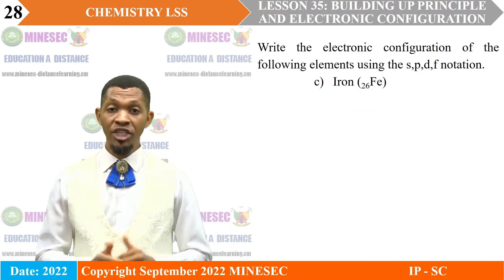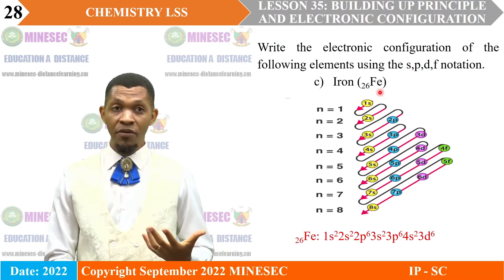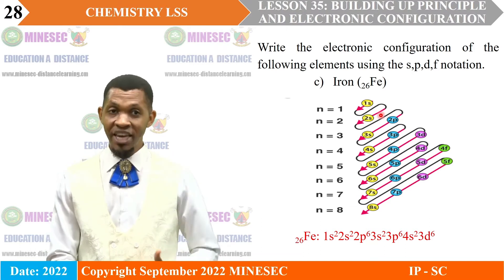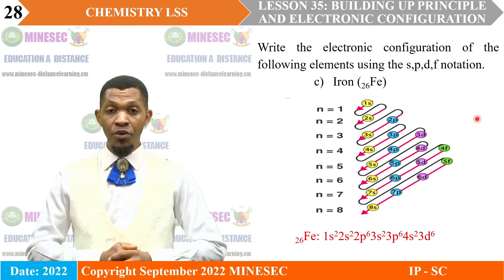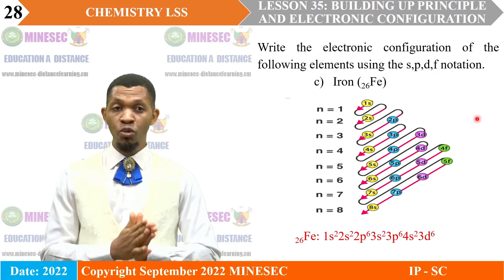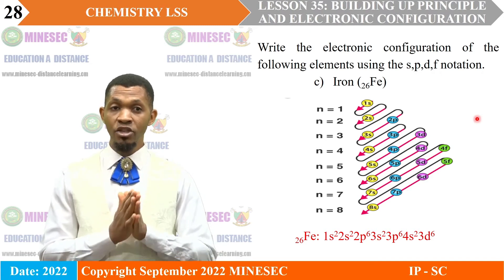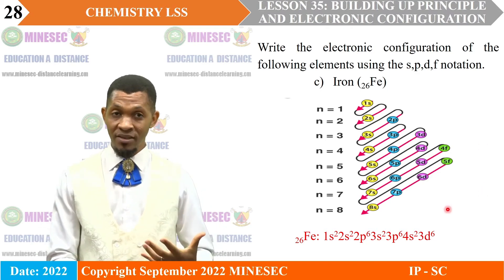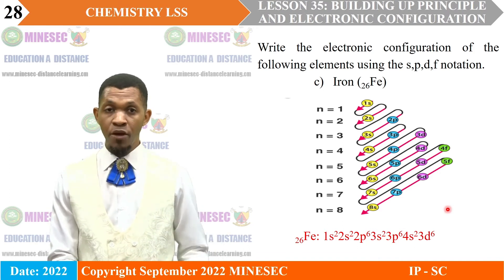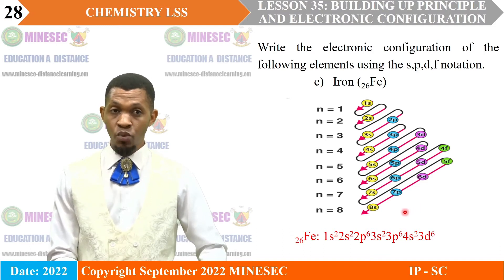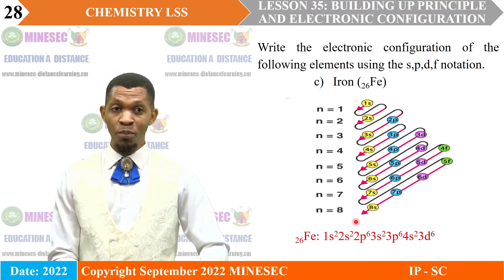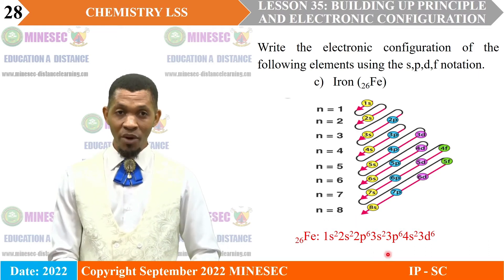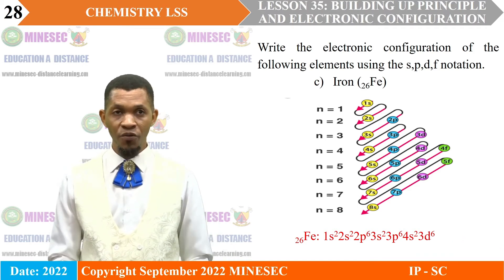C. Iron (26 electrons). Using the table and filling in order of increasing energy until 26 electrons are used up, the electronic configuration of iron is 1s², 2s², 2p⁶, 3s², 3p⁶, 4s², 3d⁶. Adding the powers: 6 plus 2 is 8, plus 6 is 14, plus 2 is 16, plus 6 is 22, plus 2 is 24, plus 2 is 26. So the electronic configuration of iron gives us 26 electrons.